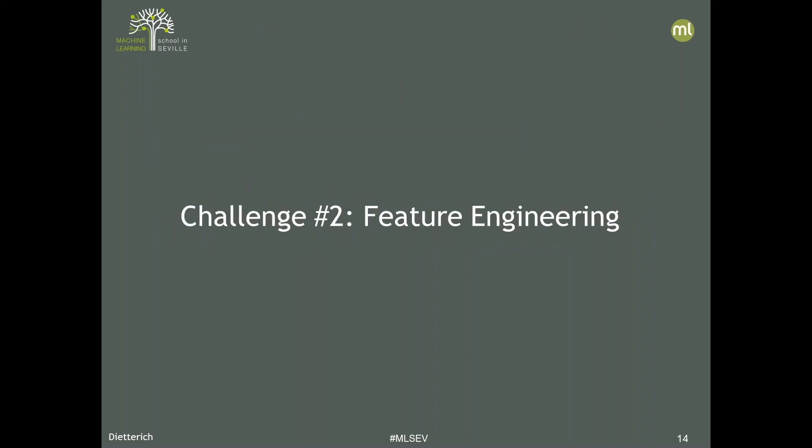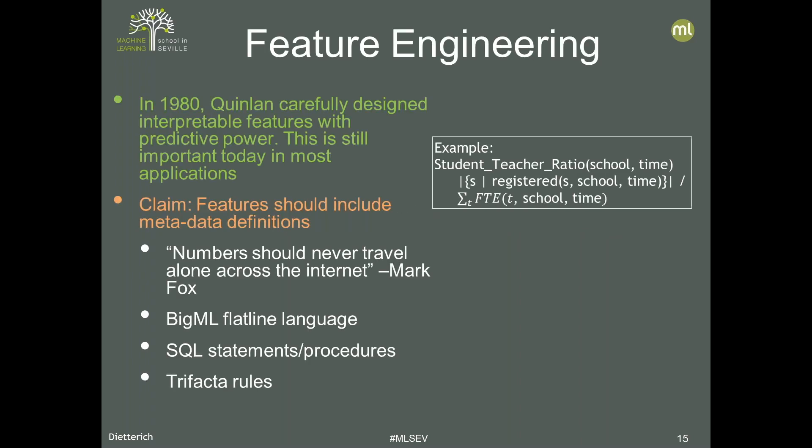The second challenge is feature engineering — really the secret to success in all machine learning problems. It's where the machine learning engineer and data scientist bring domain knowledge to bear to make better, more accurate, and more understandable features. For example, Ross Quinlan's features for chess were not just raw piece positions like 'there's a piece at A3,' but much more about distances between rooks and kings and things like that.